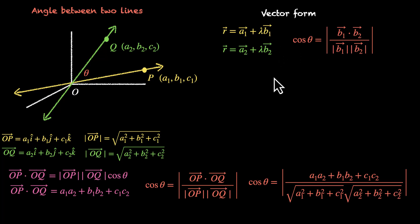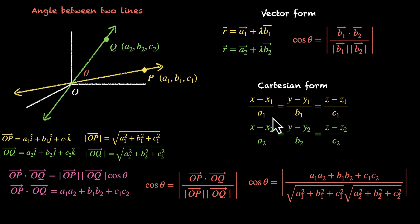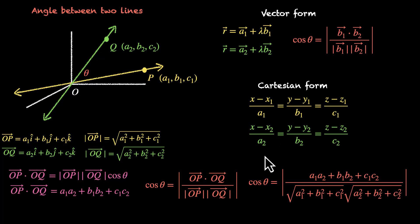In Cartesian form, if our lines are (x − x1)/A1 = (y − y1)/B1 = (z − z1)/C1 and (x − x2)/A2 = (y − y2)/B2 = (z − z2)/C2, the numerators (the points) are not important — we only look at the denominators. The direction ratios of B1 vector are A1, B1, C1, and for B2 vector they are A2, B2, C2. The dot product is A1A2 + B1B2 + C1C2, and the denominator is √(A1² + B1² + C1²) × √(A2² + B2² + C2²). This formula is used in Cartesian form; the vector form uses B1 and B2 vectors directly.